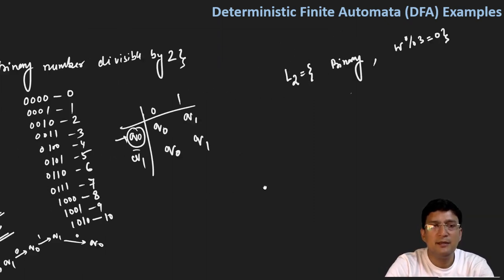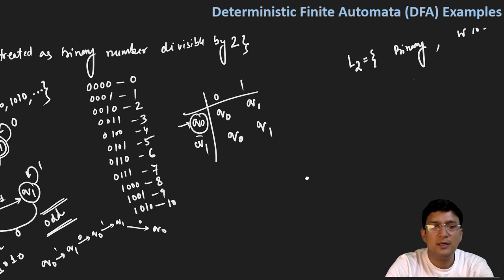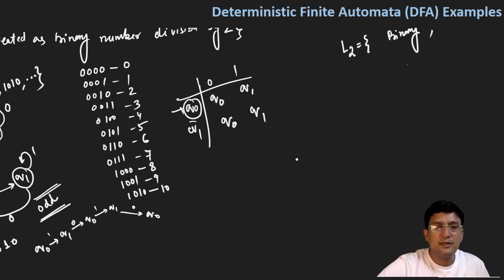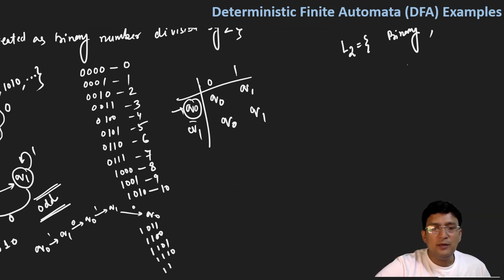If we extend the table further with binary strings like 1011, 1100, 1101, 1110, and 1111, these represent the decimal numbers 11, 12, 13, 14, and 15 respectively.